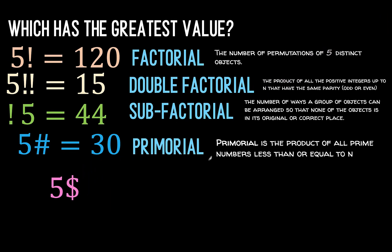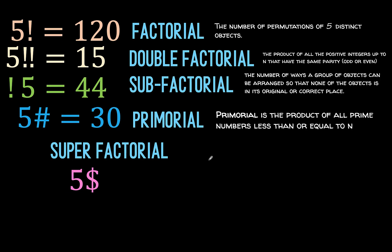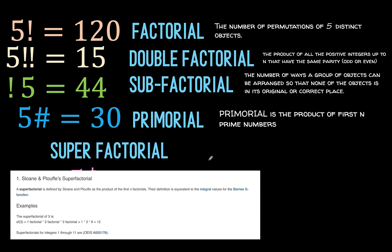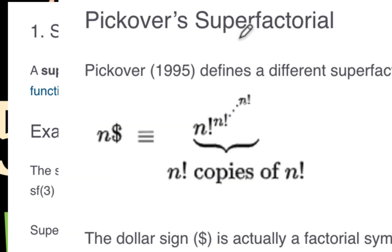Next is 5 dollar sign, which is also known as the super factorial. There are different interpretations of super factorial depending on the author. For example, if the author is Sloane and company, the symbol for super factorial is sf then a number. But if you are going to use the Pickover super factorial, the notation is a number n followed by a dollar sign, and this is what we are going to use in this example.